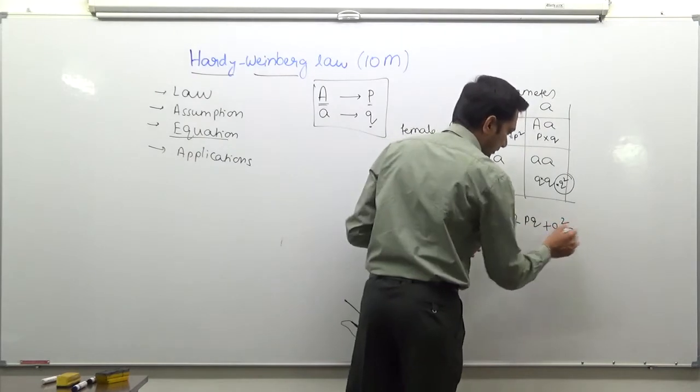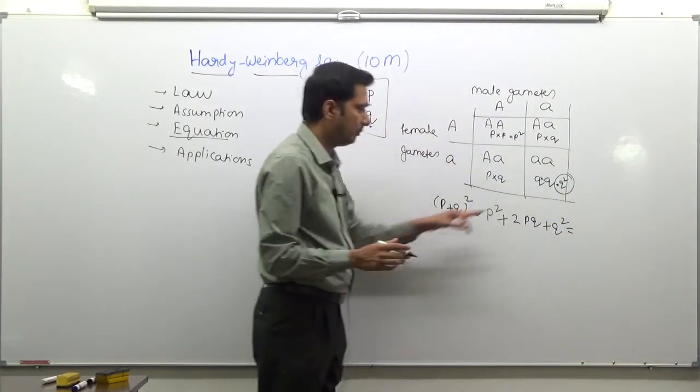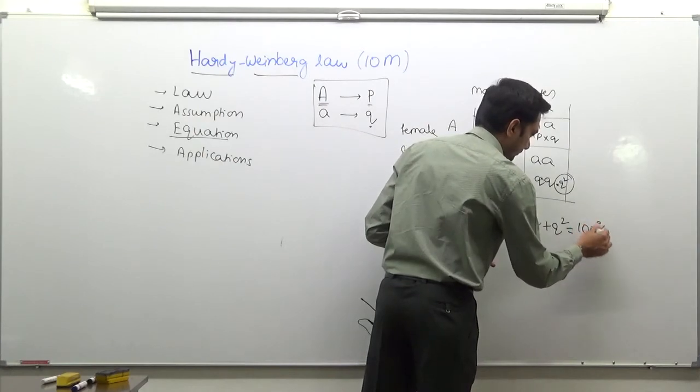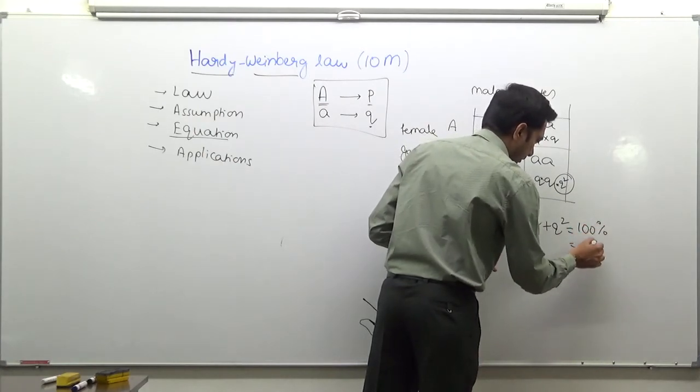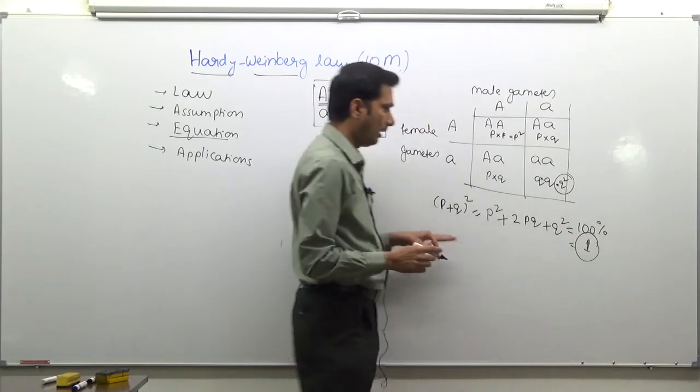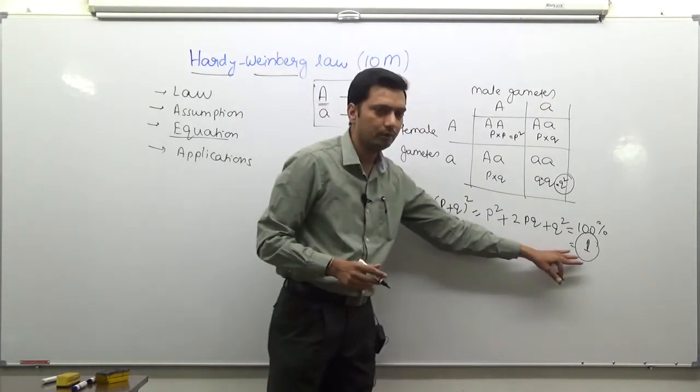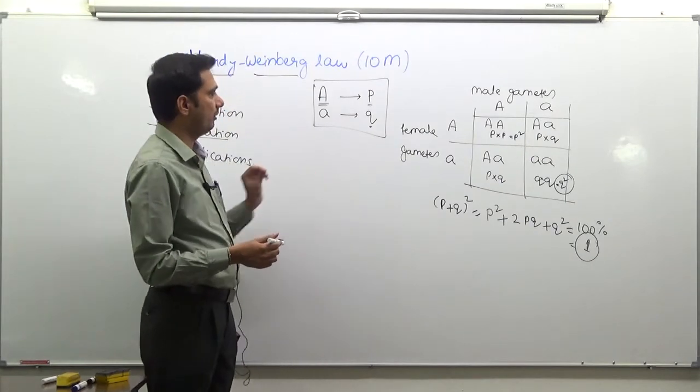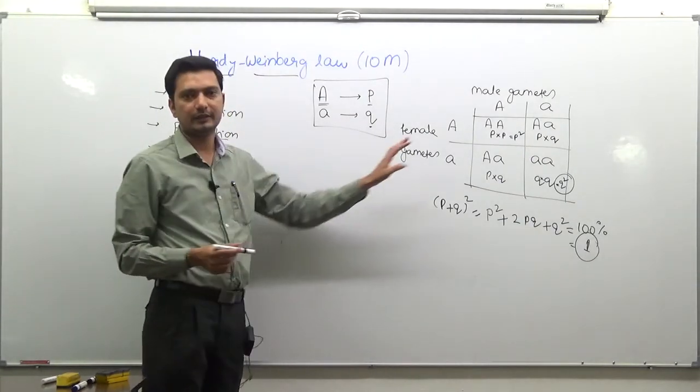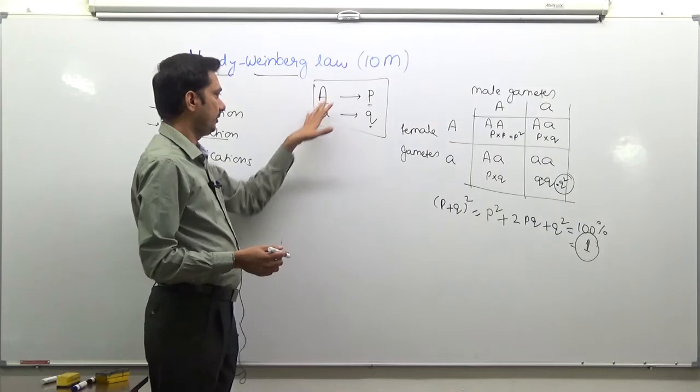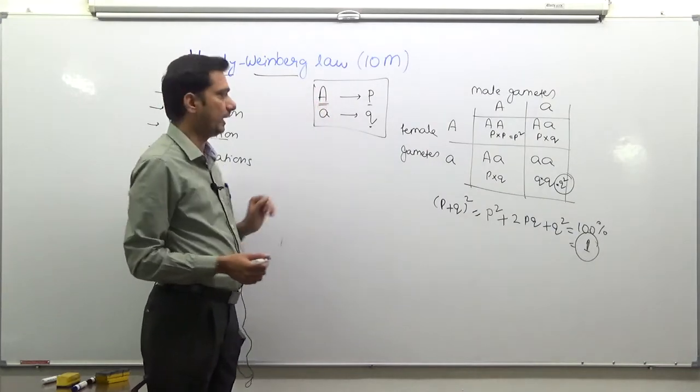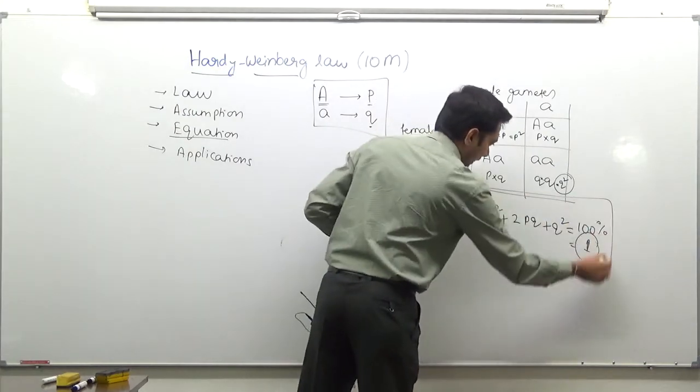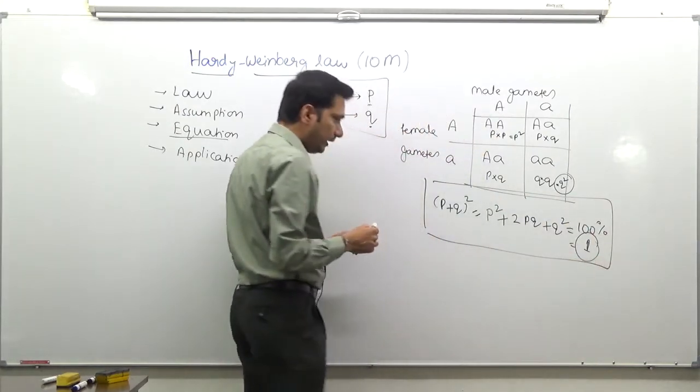As it is a population, the frequency of all the possible alleles should match to 100 percent, which we will denote by just number 1. So all these frequencies should match to 1. This is the Hardy-Weinberg law and Hardy-Weinberg equation for a simple alleles where there are 2 alleles for a simple character, and we can utilize this for calculating the frequency of any allele in a population. With that let us move to the last part of this question that is applications.